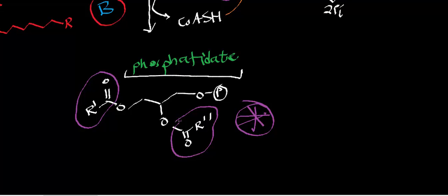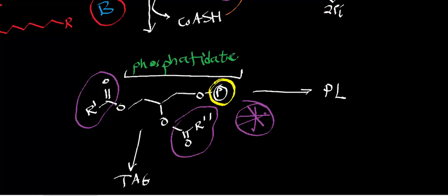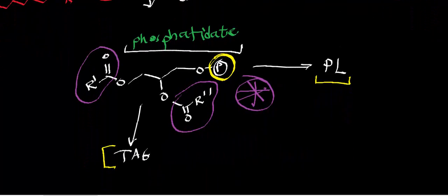Phosphatidate is kept very low inside cells because it is quickly consumed for phospholipid and triacylglycerol biosynthesis. Another reason it's kept low is that it can act as a detergent: the fatty acyl chains (R' and R'' groups) are long hydrophobic carbon chains, while the phosphate group is very hydrophilic. This amphipathic character lets it act as a detergent and disrupt cell membranes, so it's kept low and is not usually found in membranes — other phosphatidate derivatives are found there instead.